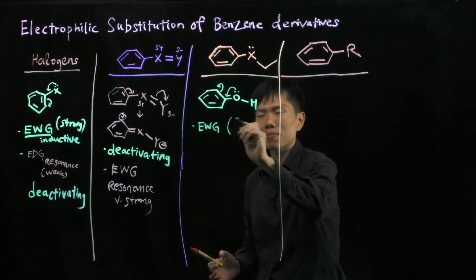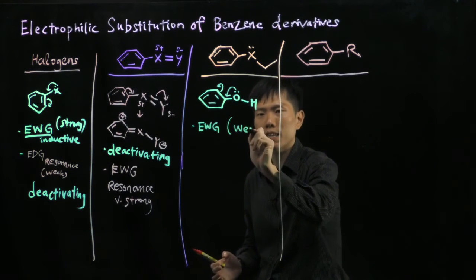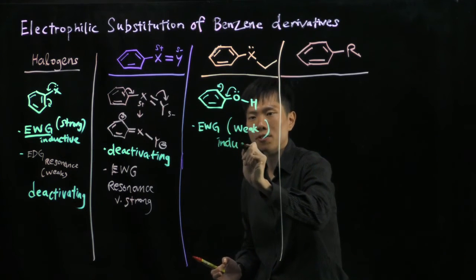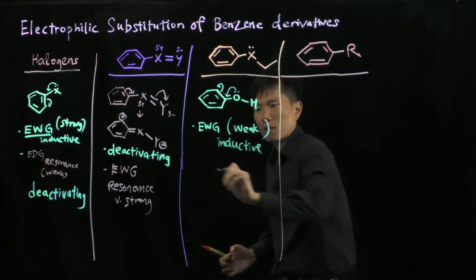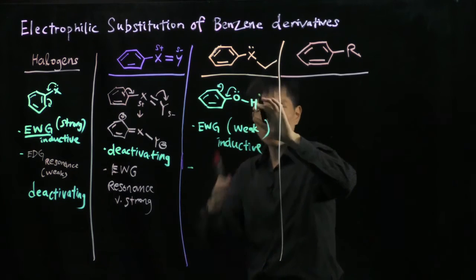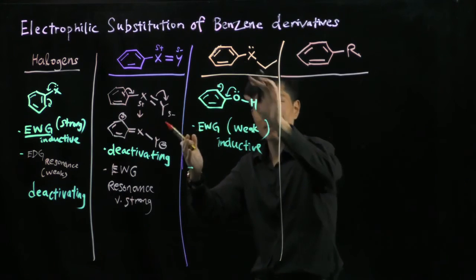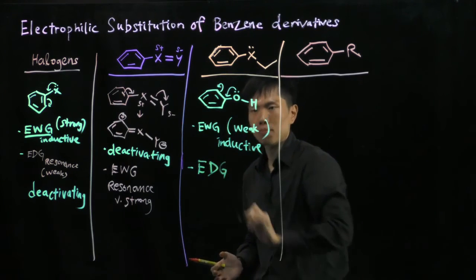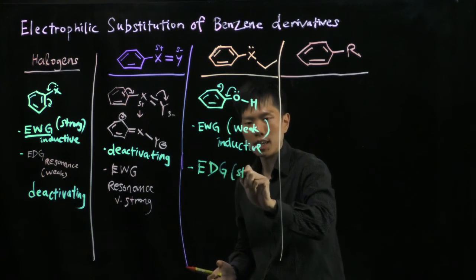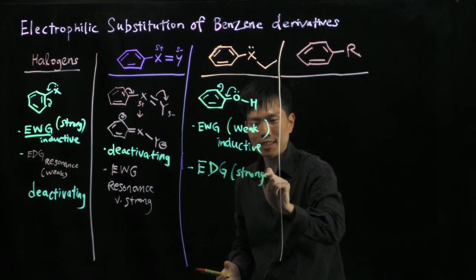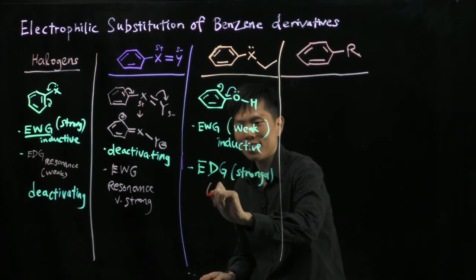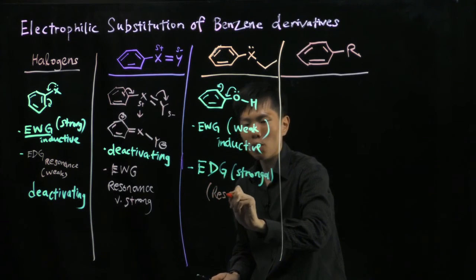This is weak, and this is by inductive. The lone pair on the oxygen, or if you're looking at an amine, it can be pushed inside. This becomes electron donating group, and this is stronger than the effect above. And that effect is by resonance. Why resonance?